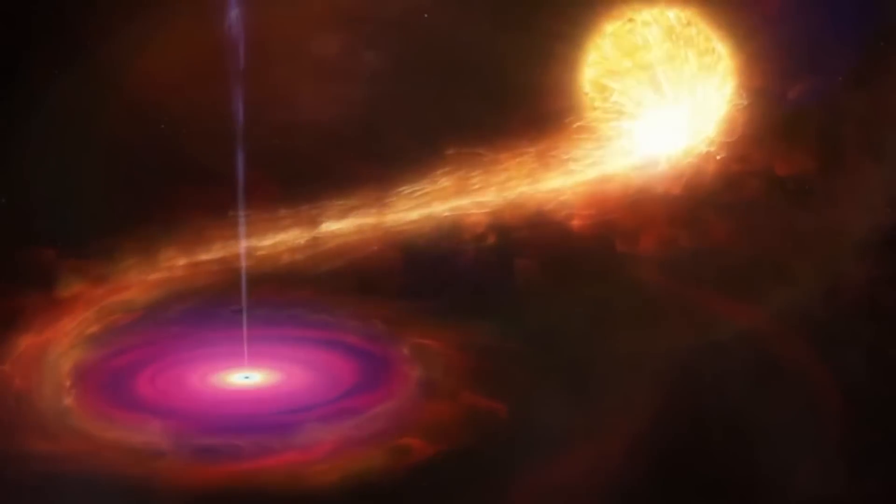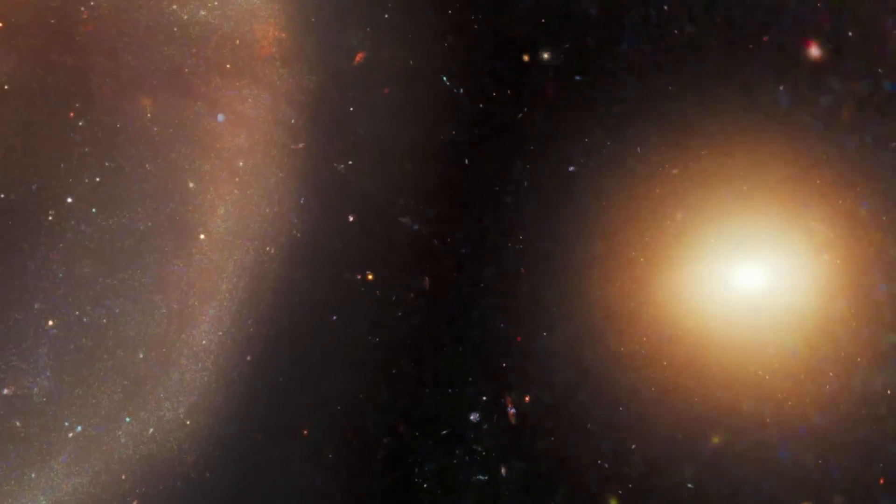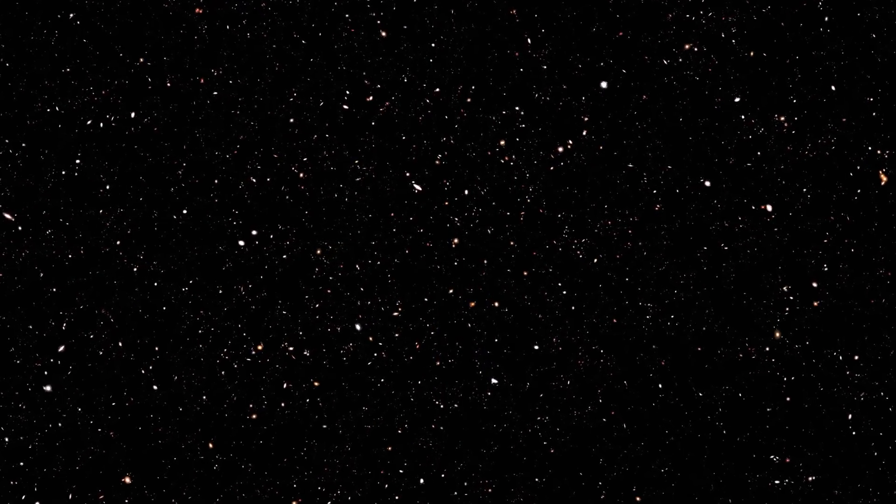But that's not all. The inner halo, another component of our galaxy, came into existence after a merger with another dwarf galaxy called Gaia Enceladus galaxy between 8 and 11 billion years ago. It's a cosmic drama playing out on a galactic scale, and it's rewriting our understanding of the universe's history.